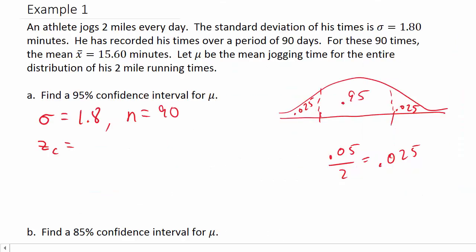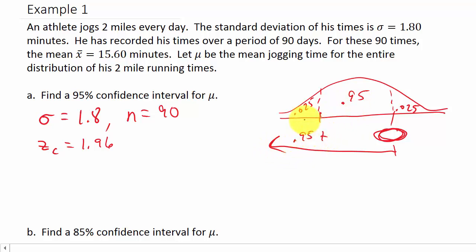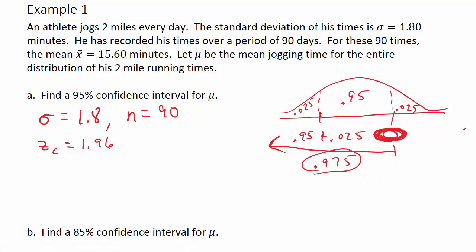But if the table didn't have that chart, we would have to find Z sub C manually. We are looking for the z-score that has an area to the left of 0.95 plus 0.025, which makes the total area to the left equal to 0.975. That's the whole area to the left of this z-value.